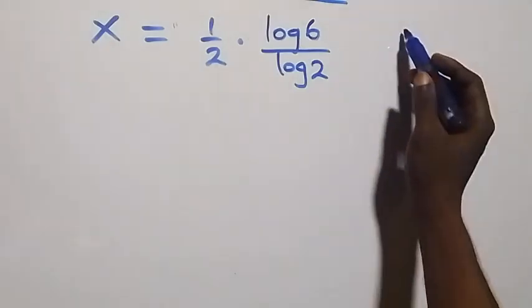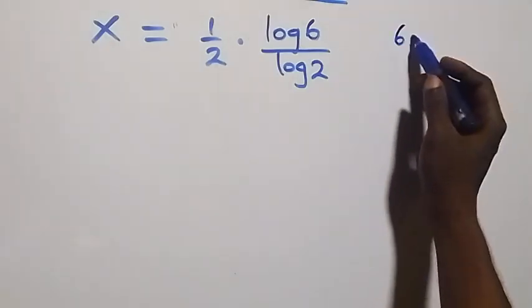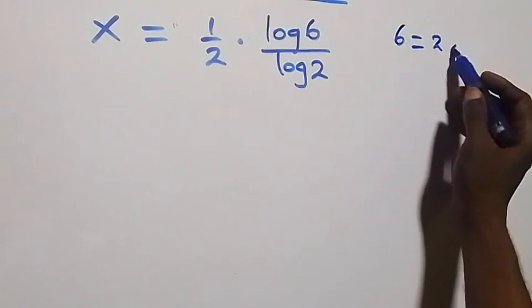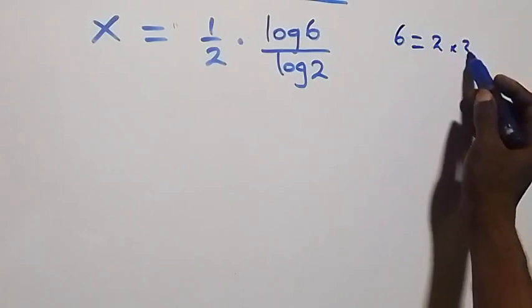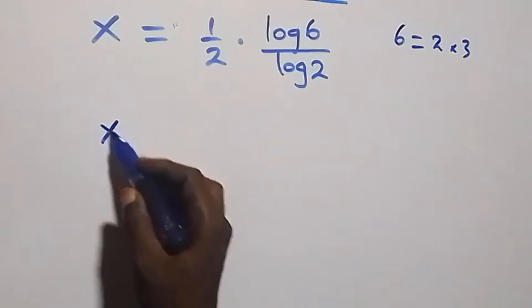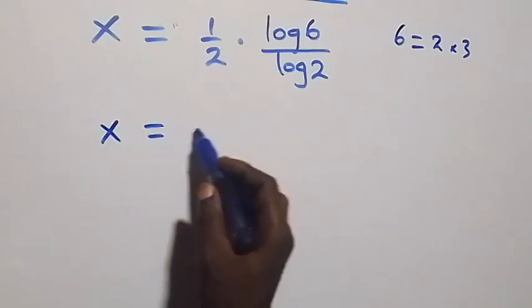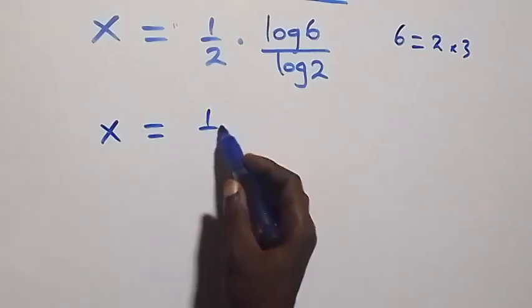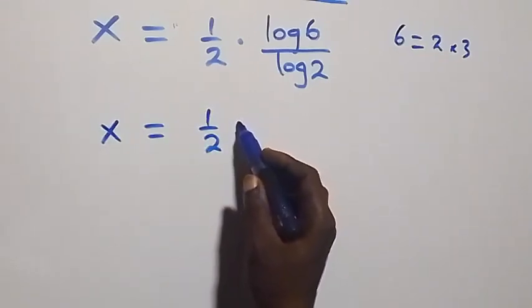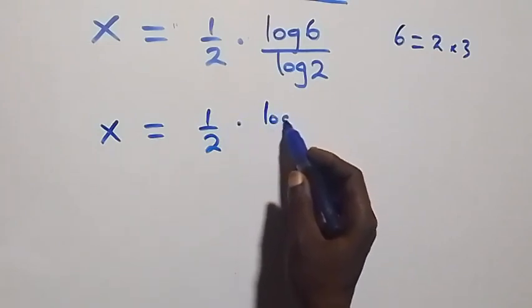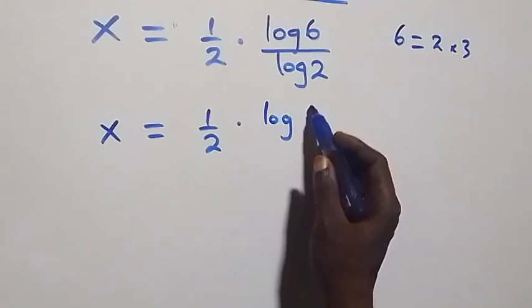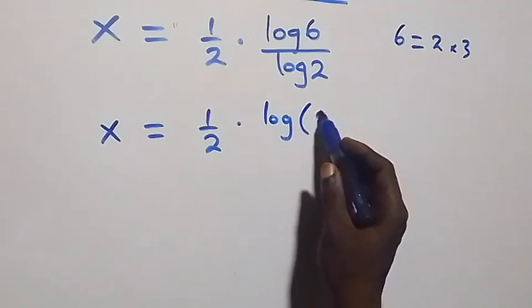From here, log 6 — we can also write 6 as 2 times 3. So we have x equals to half times log of 2 times 3.